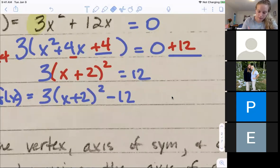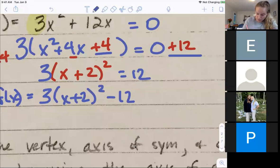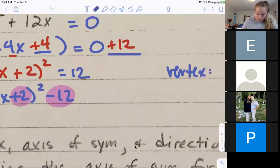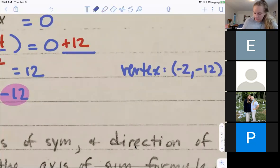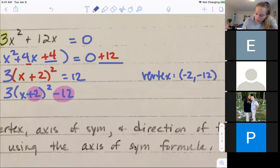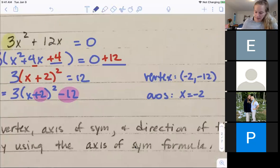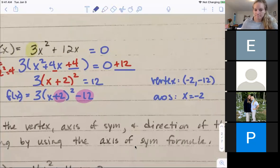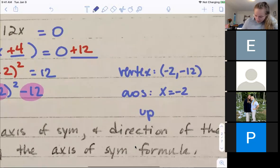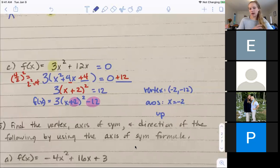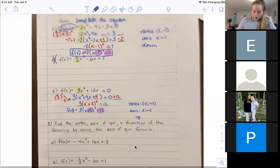Can someone tell me what my vertex is here? Negative 2, negative 12. The y value keeps its sign and the x value switches. So negative 2, negative 12. And what's my axis of symmetry? X equals negative 2. And is this going to be up or down? Up. Awesome. That's all we're doing today.